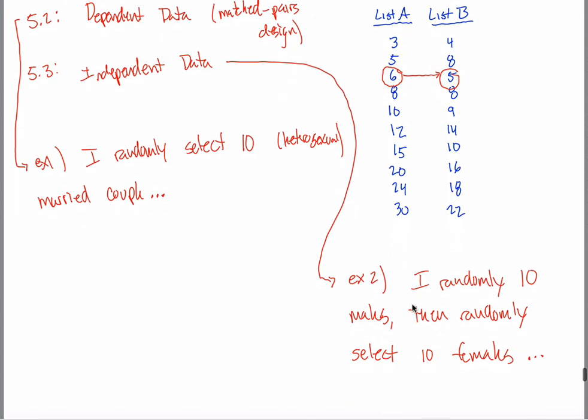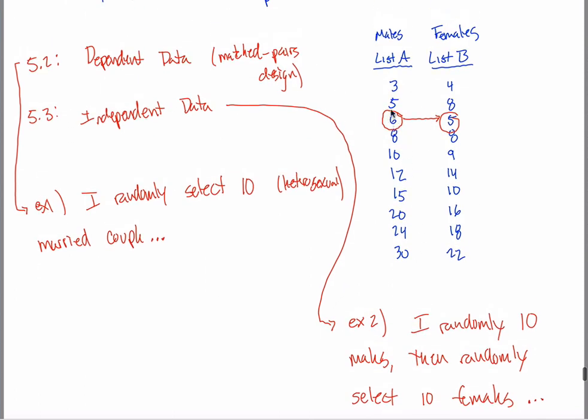The ordering of the second list is dependent upon the ordering of the first list. But in example two, the ordering doesn't matter at all. This male and this female are not connected at all. I could have switched the order of these two, and it wouldn't matter at all because this observation is not connected to this one at all. So if the ordering of list B is dependent upon the ordering of list A, you have dependent data. And if the ordering of list B is independent of the ordering of list A, you have independent data.